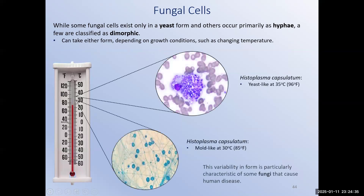Just as bacterial cells can display pleomorphism, some fungi can differ in appearance depending on environmental conditions, and this is usually related to temperature. At around body temperature, the fungi may appear oval, like oval yeast. However, at a cooler temperature, they may resemble the molds. We call this dimorphic. It's very important to know which fungal species are dimorphic because their correct identification depends on the temperature at which they're being viewed.